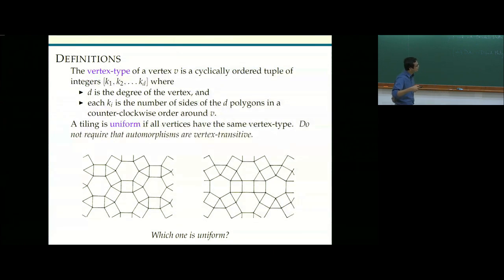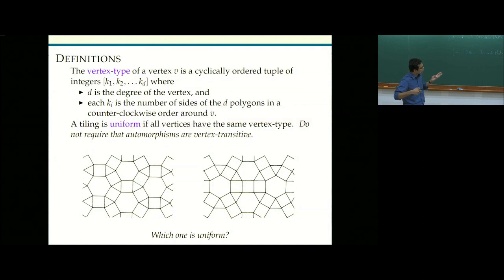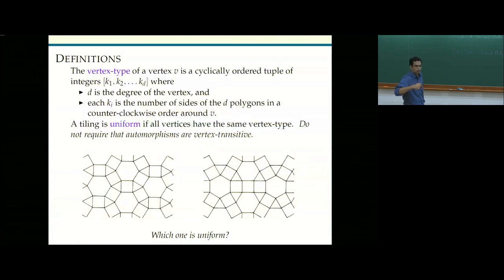There's a lot of literature over the last 100 years on tilings. Different places use different terminology, and some require that automorphisms are vertex transitive — not just local symmetry but global symmetry. But in our definition, we don't require that. Uniform tilings are just the ones where every vertex has the same polygons around it, with no other global symmetry assumption.